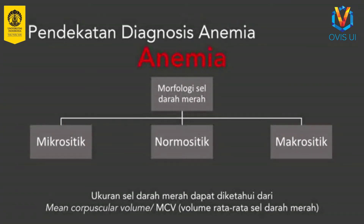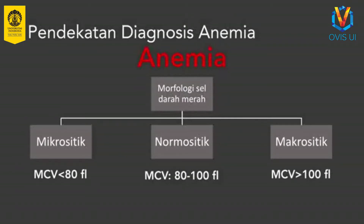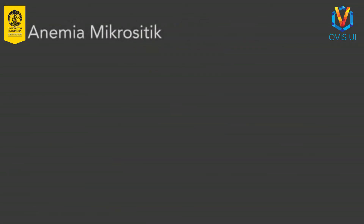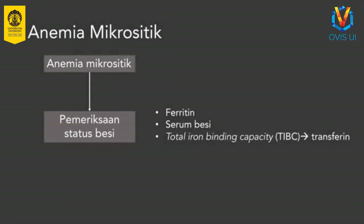Berdasarkan MCV, sel darah merah disebut mikrositik jika memiliki MCV kurang dari 80, normositik jika memiliki MCV 80-100, dan makrositik jika MCV-nya lebih dari 100. Sekarang mari kita bahas mengenai pendekatan diagnosis untuk anemia mikrositik. Setelah diketahui bahwa seseorang mengalami anemia mikrositik, pemeriksaan berikutnya yang perlu dilakukan adalah pemeriksaan status besi. Status besi meliputi feritin, serum besi, dan total iron binding capacity atau TIBC.